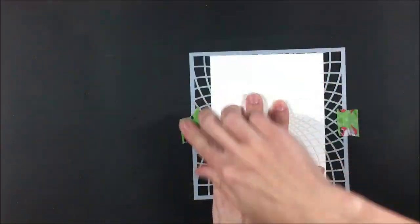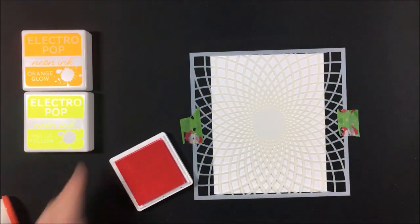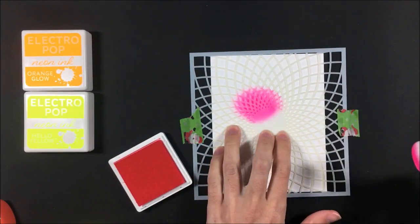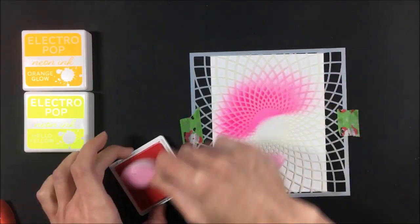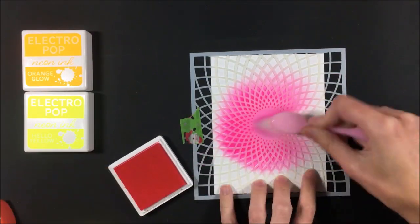I'm coming in with my stencil and I'm going to tape that down and I am going to do a kind of ombre look. So I am using Popp'n Pink and then Orange Glow and finishing it off with Hello Yellow.